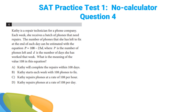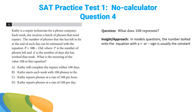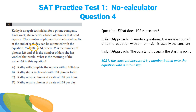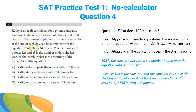This is another model question — a math equation that describes something in real life, in this case how many phones Kathy repairs. We're being asked what the 108 number represents. In model questions, the number bolted onto the equation with a plus or minus sign is usually the constant, and the constant is usually the starting point. 108 is bolted on with a minus sign, so it must represent how many phones Kathy starts with. Answer choice B.